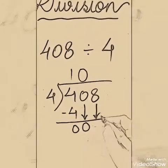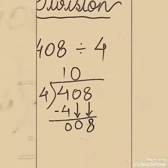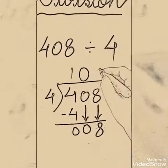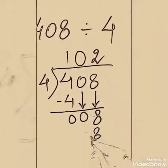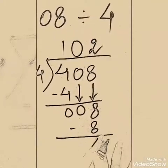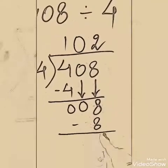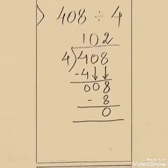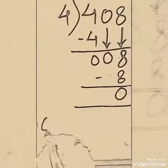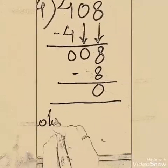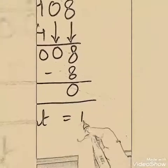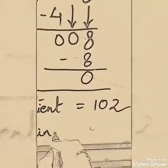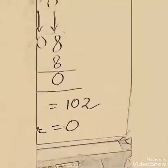Now bring down the third digit, that is 8. 8 is greater than 4, so say the table of 4. 4 ones are 4, 4 twos are 8 — we will stop here, and we will get no remainder at all. You can put a cross or you can put a 0 — both are correct. So answer: Quotient is equal to 102, remainder is equal to 0.